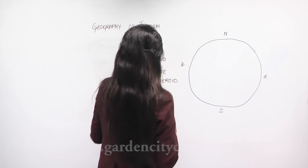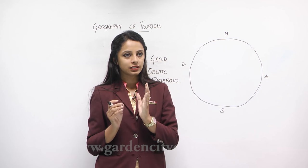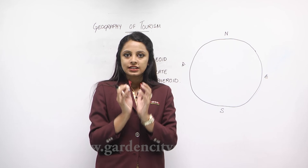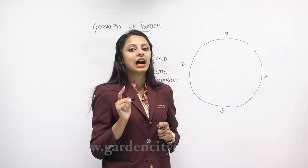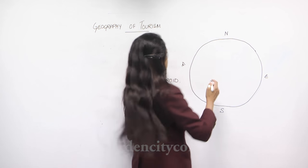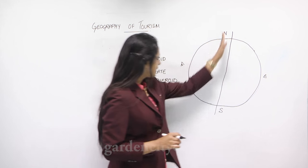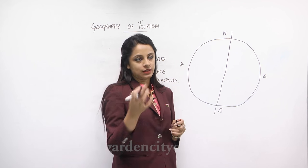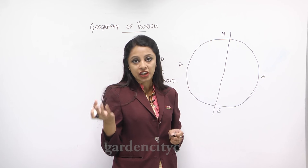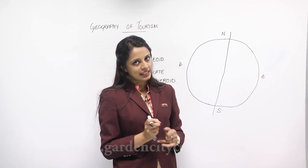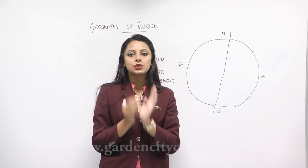The axis of the earth is a little tilted — the x and y axis is not straight. It is tilted at an angle of 23 and a half degrees. When we notice a globe, it is always a little tilted towards one side, and due to rotation and revolution it gradually tilts to the other side.